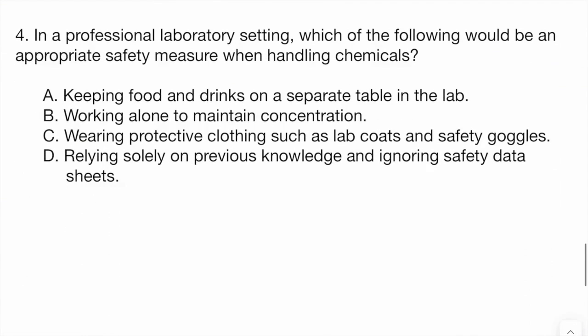Question 4. In a professional laboratory setting, which of the following would be an appropriate safety measure when handling chemicals? A: keeping food and drinks on a separate table in the lab. B: working alone to maintain concentration. C: wearing protective clothing such as lab coats and safety goggles. Or D: relying solely on previous knowledge and ignoring safety data sheets.